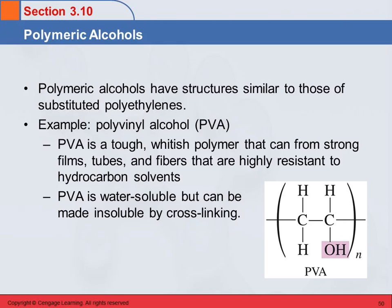You can also make polymeric alcohols. A polymer is a series of monomers joined together in one long molecule. These have structures similar to substituted polyethylenes — for example, polyvinyl alcohol, which contains a hydroxyl group in the chain. Polyvinyl alcohol is water-soluble but very resistant to hydrocarbon solvents, and you can make it insoluble in water by cross-linking.